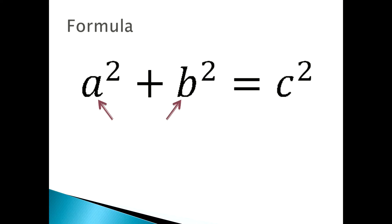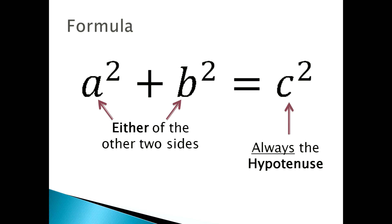The formula. The formula is a squared plus b squared equals c squared. A squared and b squared can be either of the two sides. However, c squared is always, always the hypotenuse. It never changes.